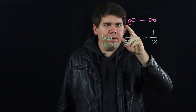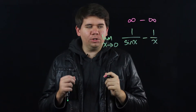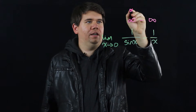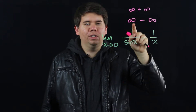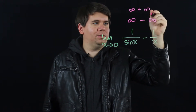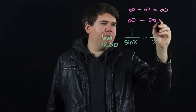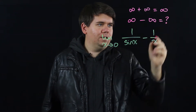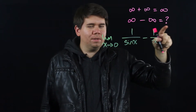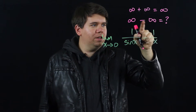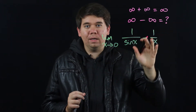Either way we get something of the form infinity minus infinity. Now if we instead got something of the form infinity plus infinity, you would know what that means — if one term is getting arbitrarily large and the other term is getting arbitrarily large, when you add them together it's still growing arbitrarily large. But infinity minus infinity is not at all clear. Is this infinity a little bit bigger? If so, there should be something left over. If it's smaller, maybe it becomes negative. If they're the same size, maybe it's zero.